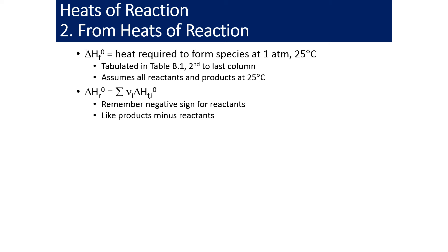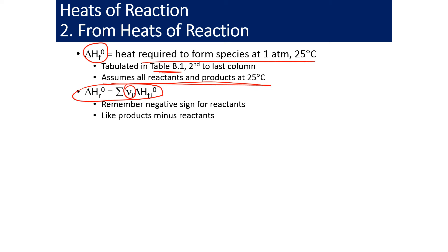When we say standard heat of formation, the heat is required to form the species at 1 atmosphere and 25 degrees Celsius, and we have a table for those. For a number of compounds, either vapor or liquid, we can look those up. It also assumes all reactants and products are at 25 degrees Celsius, so we sum those species multiplied by the stoichiometric coefficient to get our delta H of reaction.